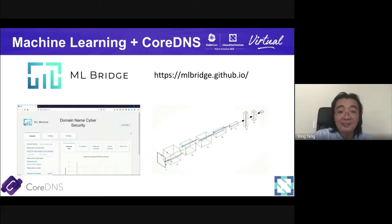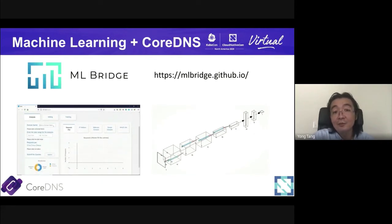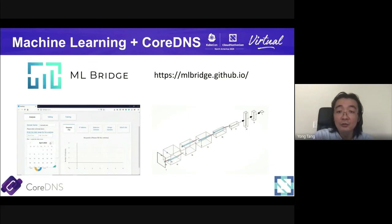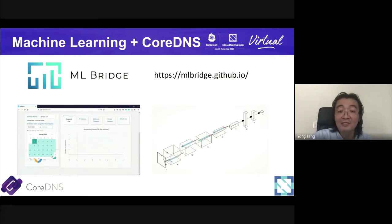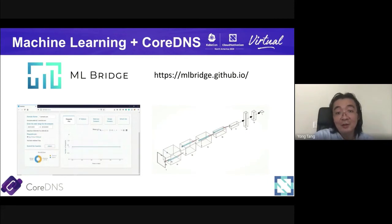The student even provided a nice UI on the left side, while the right side shows the convolutional neural network model used for detection. It's a great example of combining machine learning, DNS infrastructure, and security. The student named this project Emil Bridge and has a very nice website worth browsing.